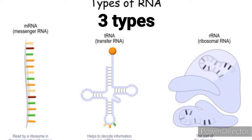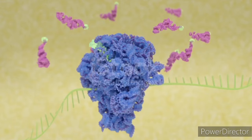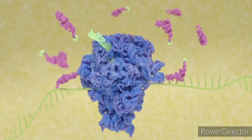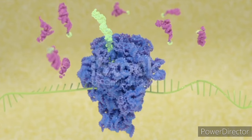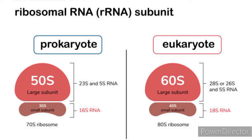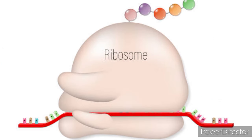Types of Ribosomes: Eukaryotic cells possess cytoplasmic ribosomes for protein synthesis within the cell and also have ribosomes associated with the rough endoplasmic reticulum (RER), involved in synthesizing proteins for secretion or membrane-bound proteins. The number and activity of ribosomes in a cell can be regulated based on the cell's needs for protein synthesis, adjusting to changing environmental conditions or developmental stages.